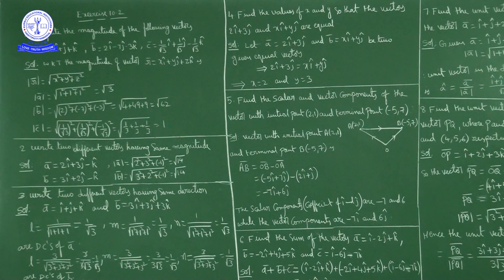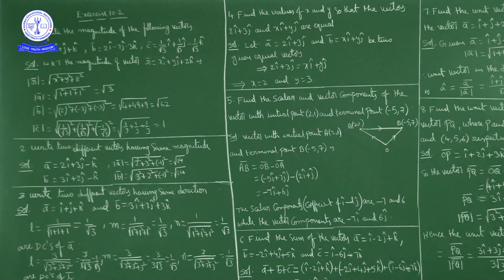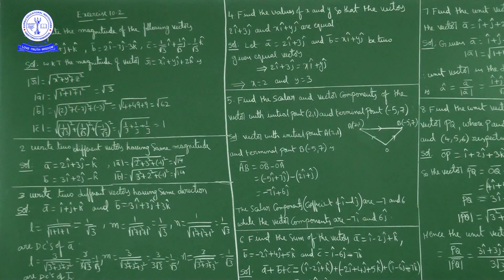The vectors given are: a̅ = î + ĵ + k̂, b̅ = 2î − 7ĵ − 3k̂, and c̅ = (1/√3)î + (1/√3)ĵ − (1/√3)k̂. We know that the magnitude of vector r̅ = xî + yĵ + zk̂ is √(x² + y² + z²). This is the magnitude formula.